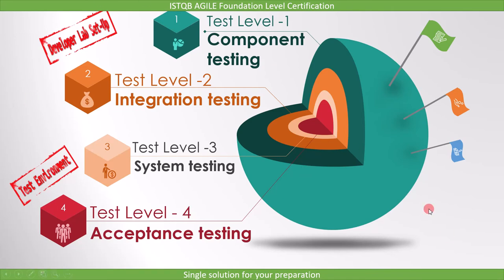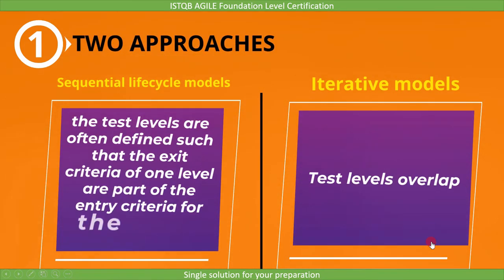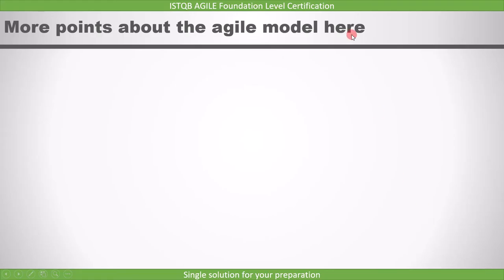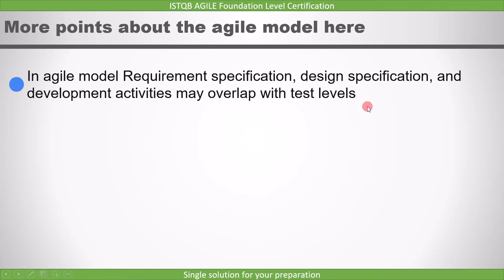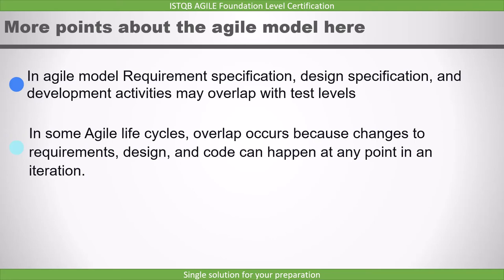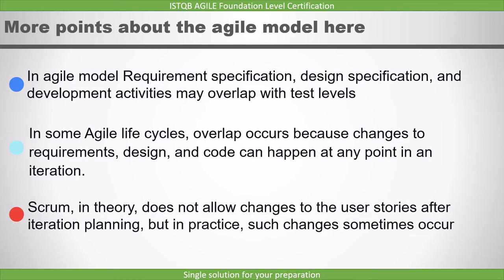This is what we covered at the foundation level. The way we define test levels in sequential lifecycle models and iterative models is different. In sequential lifecycle models, the test levels are often defined such that the exit criteria of one level are part of the entry criteria for the next level. But in agile models, this rule does not apply — test levels overlap. In agile, requirement specification, design specification, and development activities may overlap with test levels, because changes to requirements, design, and code can happen at any point in an iteration. Scrum in theory does not allow changes to user stories after iteration planning, but in practice such changes sometimes occur.